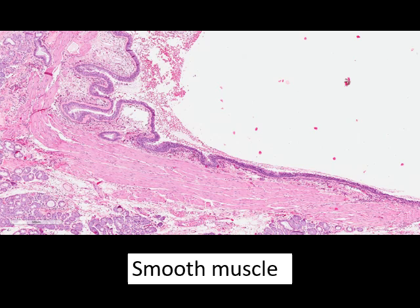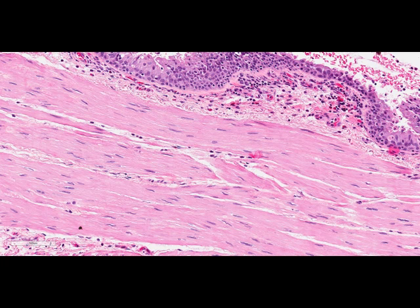Microscopically: the lumen is visible, then the epithelium, and just under it the supporting part of the mucosa. The mucosa ends where the smooth muscle begins. Below the smooth muscle is the submucosa, where the submucosal salivary-type glands are. Further out is cartilage, and even further is the serosa.